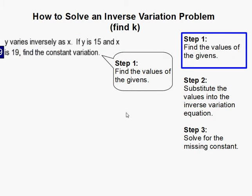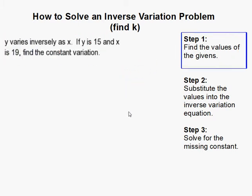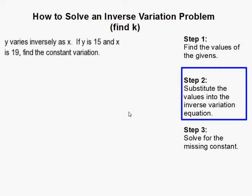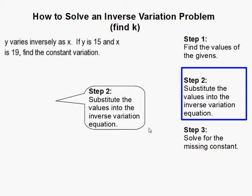So what we need to do next is substitute those values into the inverse variation equation, which is y equals k over x. k is usually used for the constant variation.